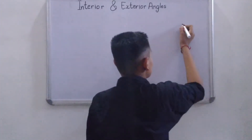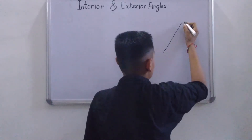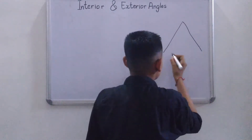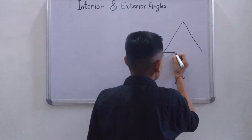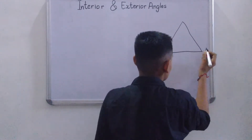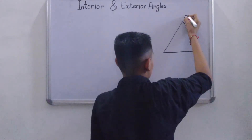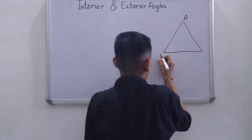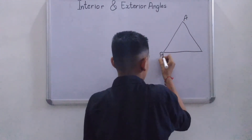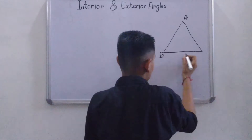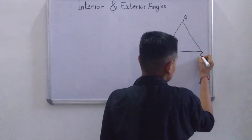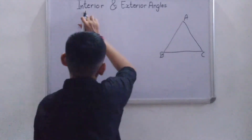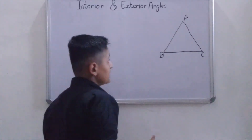Let's assume this is our triangle. First, name the points: Angle A, Angle B, Angle C.